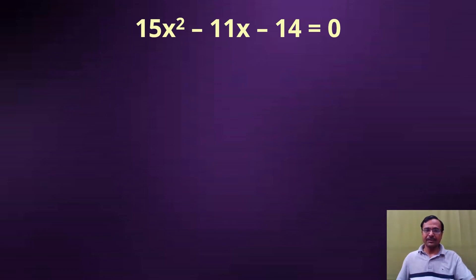Now the first thing after seeing this type of equation you should get in mind is the coefficient of x² which is 15 and the constant term 14. Let us forget the sign for the moment, the negative or the positive signs.